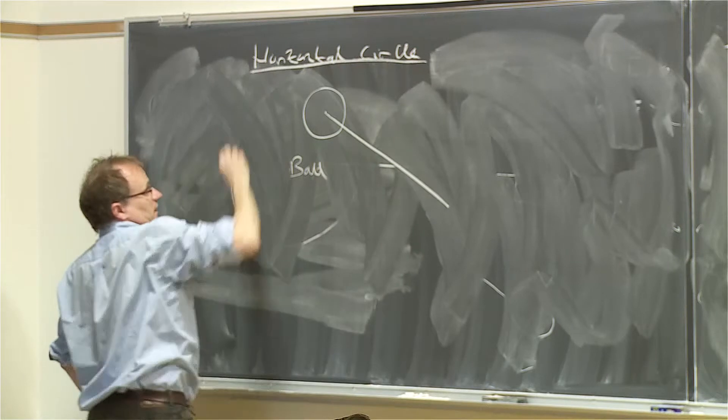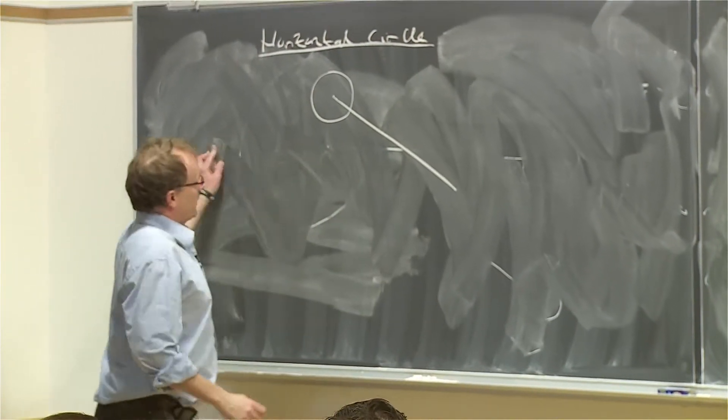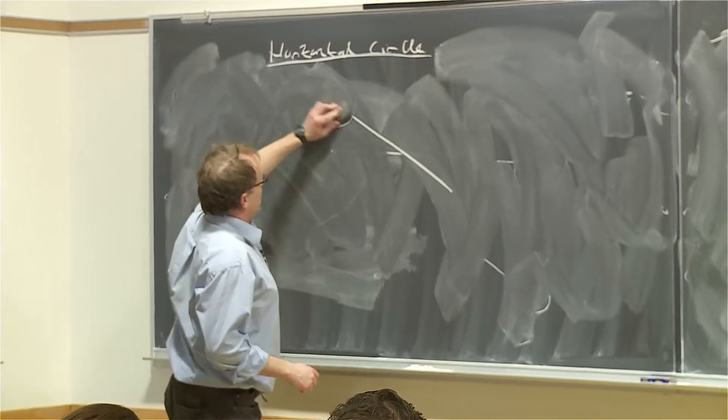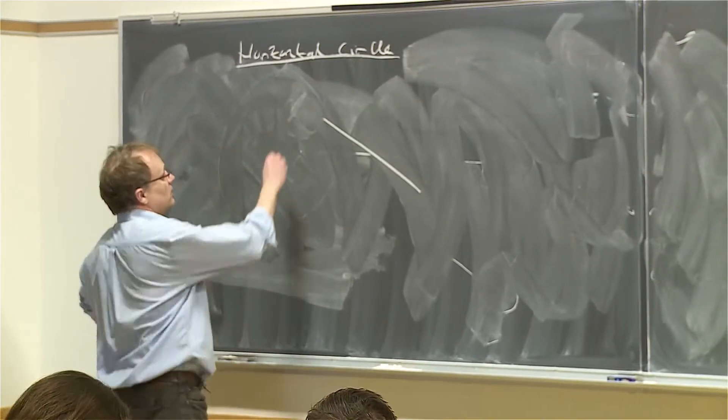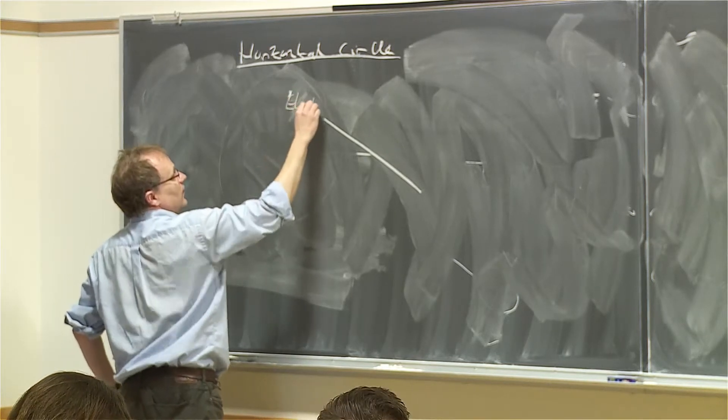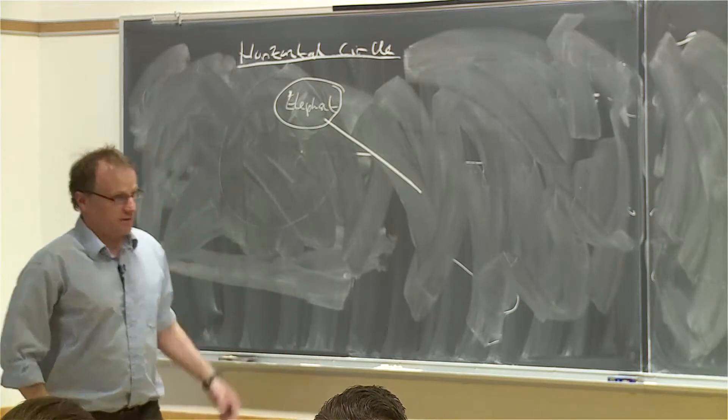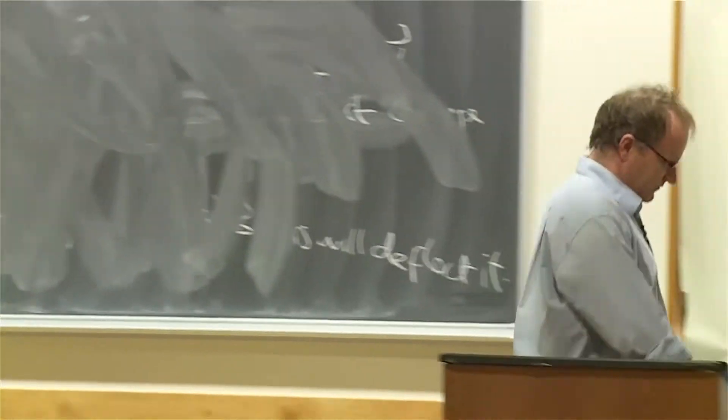So we're going to spin an object in a horizontal circle above your head. Now, I don't actually have a ball. I couldn't find a ball this morning. What I managed to find is an elephant. I can't really draw an elephant, but I can write elephant. Some object. Here's my elephant.